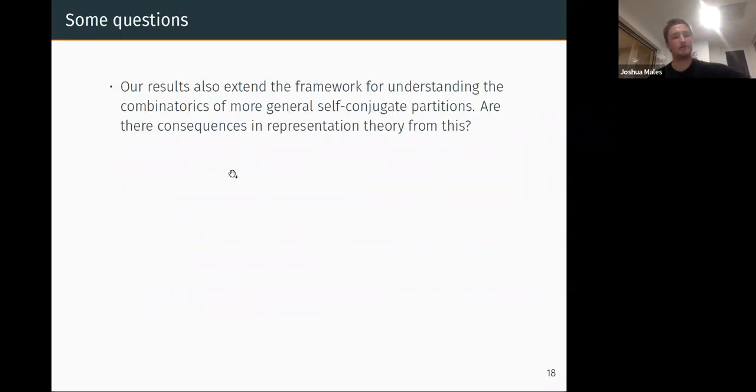Maybe I'll end briefly with just some open questions that I would like to understand more, and maybe people here could tell me about. The results in this paper extend the framework for understanding the combinatorics of more general self-conjugate partitions. Our paper basically gives a complete description of self-conjugate seven-core partitions, and the same thing can be done—the same process—for any t. So I can always do the same process we do in this paper and come up with a complete description of self-conjugate partitions. What are the consequences of this? This is something I haven't had a chance to think about too much, but are there consequences in representation theory for example?